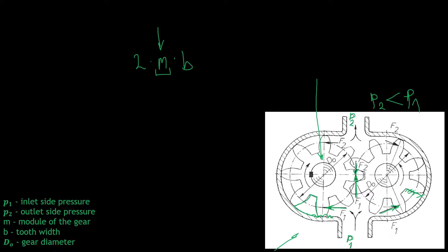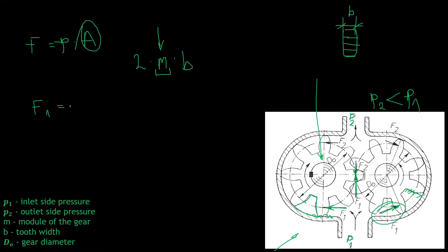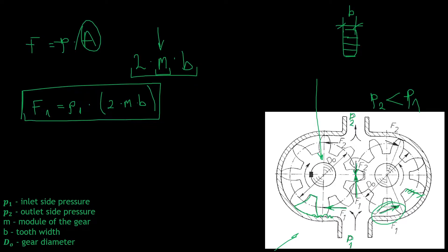If you look at this gear from the side you will see something like this — this is from the side and this is actually B, the width. So if you want to calculate the force that pushes this gear, force F1 is equal to pressure times the area upon which the pressure acts. So we have P1 times the projection on the radial plane, which is 2 times M times B. This is how we calculate the force that is pushing the gears.